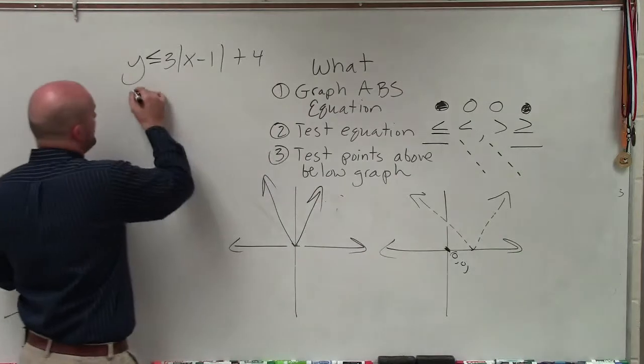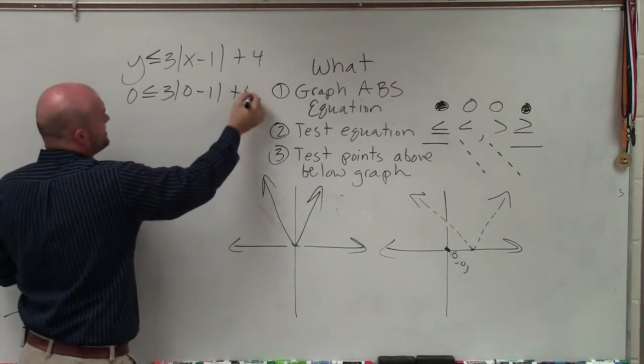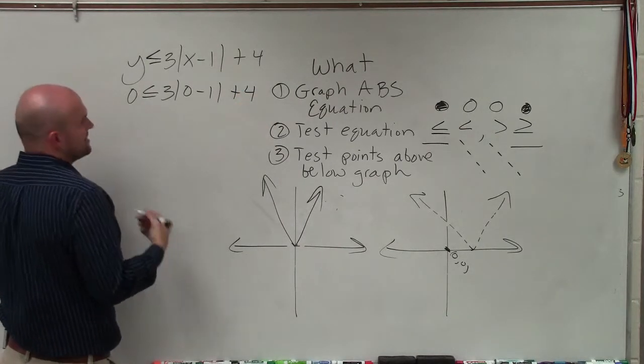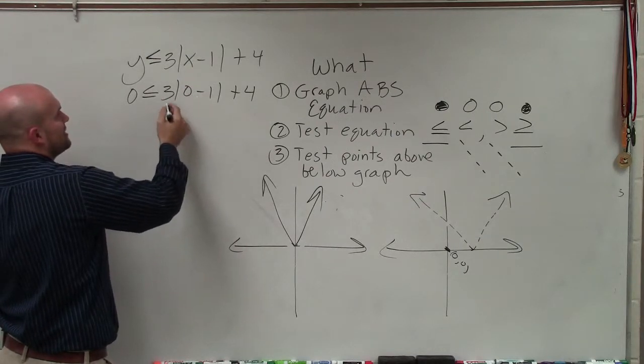To test (0,0), plug in zero for my x-coordinate and y-coordinate. If it makes my inequality true, then that's where I'm going to shade. So 0 - 1 = -1, |-1| = 1, 1 × 3 = 3, 3 + 4 = 7. So 0 ≤ 7, which is true.